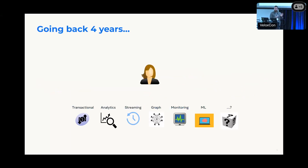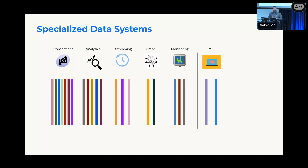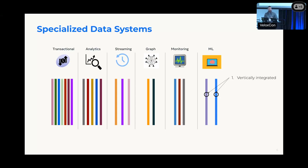Starting with composability — going almost four years back, we were in a place where users have different types of workloads with different characteristics and requirements, and we used to specialize engines. So for every type of workload with slightly different requirements, you'd go and develop a whole new full-blown data management system. Each space represents one type of workload, going from transactional to analytics, streaming, graph, and all those things.